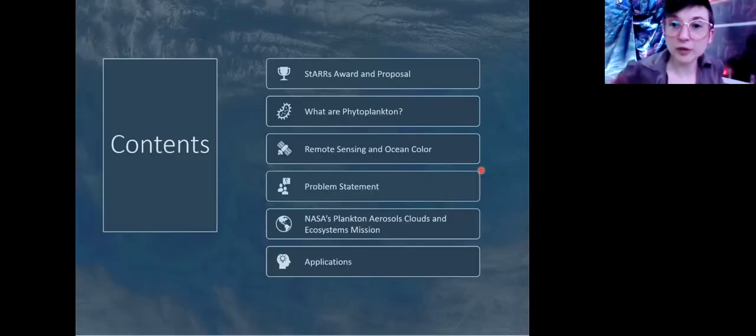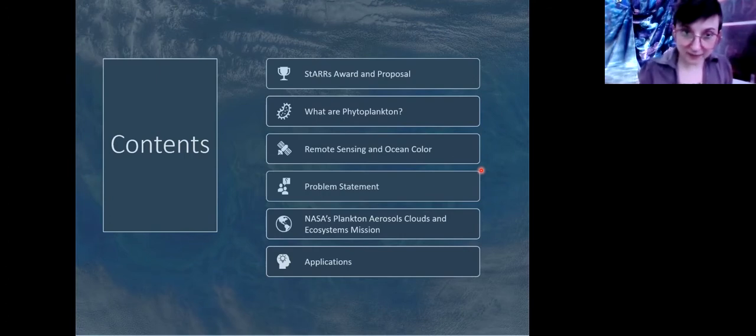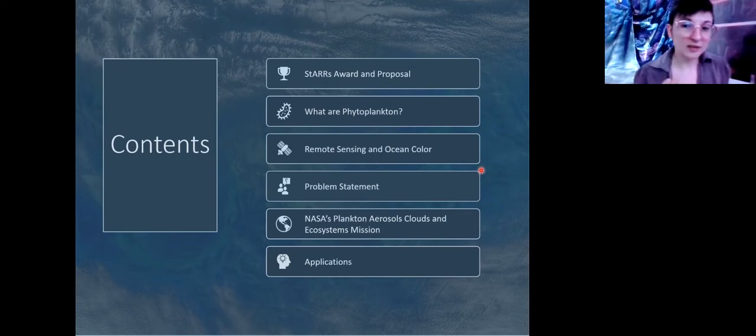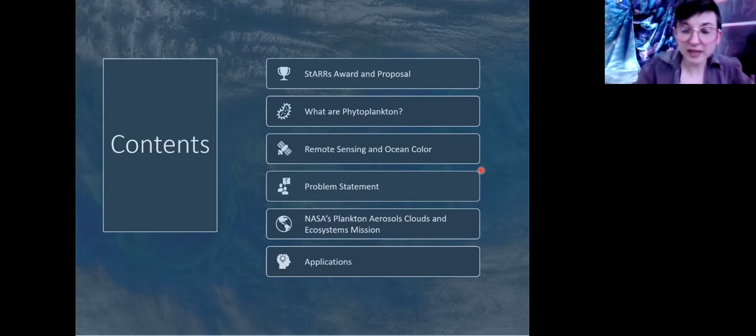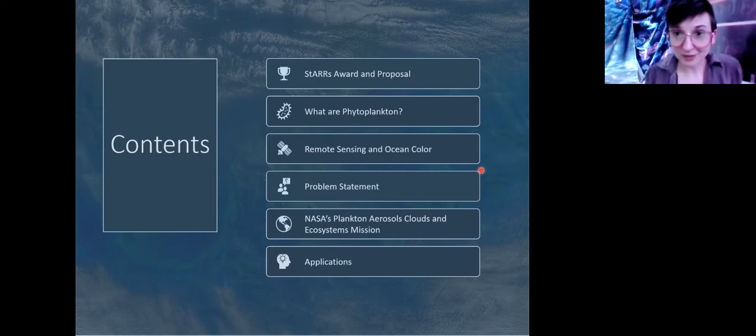Here's a brief overview of my topics today. First I'll explain what my fellowship award was and what I propose to do for it. Then I'll give you some background information about phytoplankton, remote sensing, and ocean color. That'll lead me into a major problem that a lot of oceanographers are facing right now. And then I can talk about PACE and tell you how I think it will help solve some of those problems, and then go into some applications of PACE.